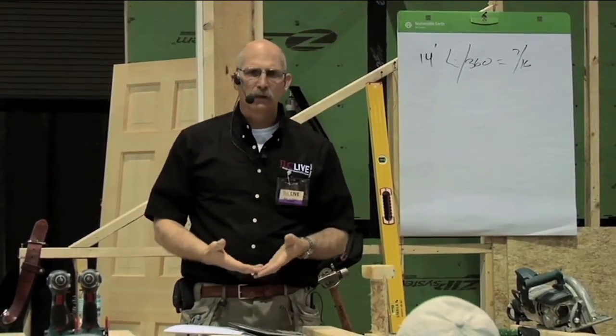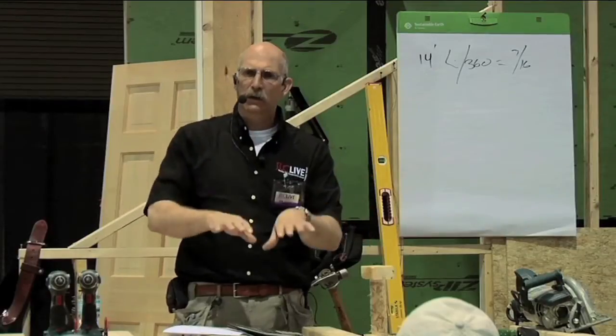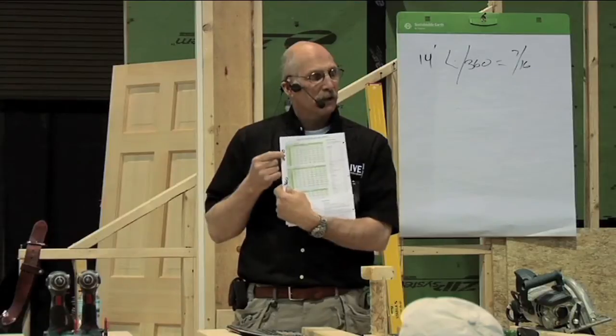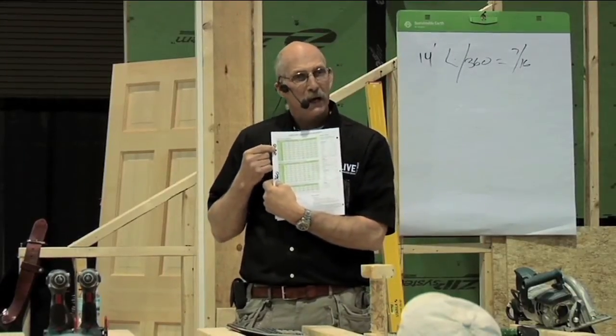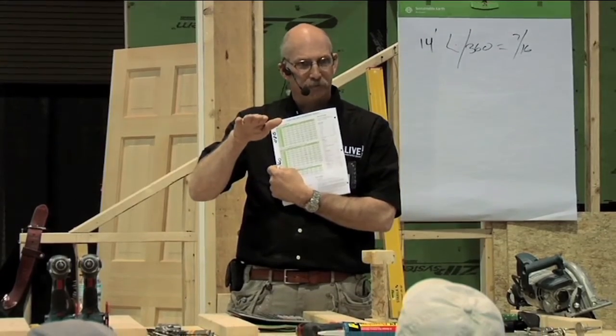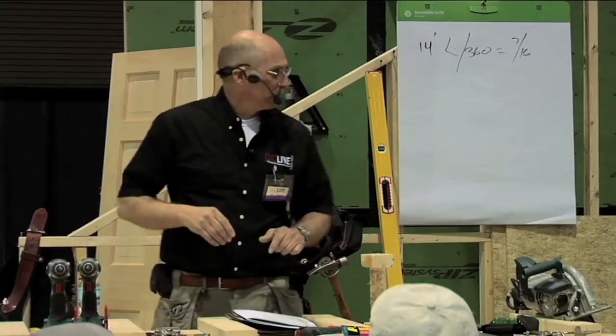To you and I, it gives us an idea of how stiff the floor is. What does the floor feel like when you walk on it? If you divide by a higher number like 480, the fractional value is going to be even lower. So it's going to be a stiffer floor with less deflection.